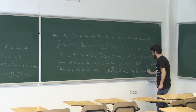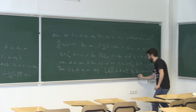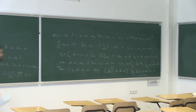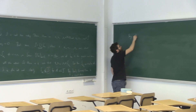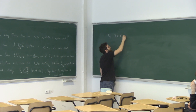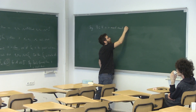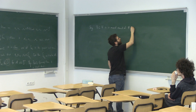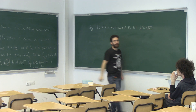By Zorn's Lemma, there is a maximal element B. Let B be a maximal element of P. Look at the span of B — let W be the subspace of V which is the span of B.